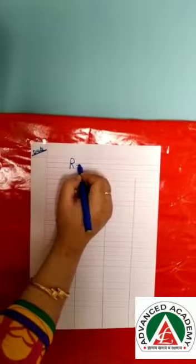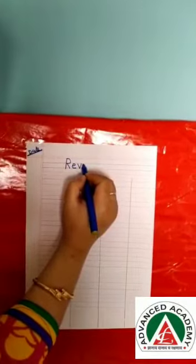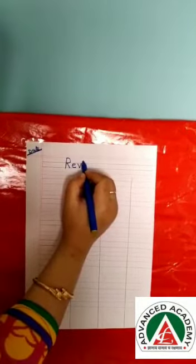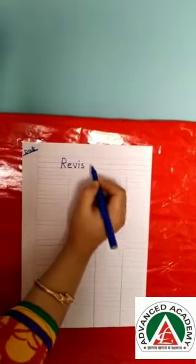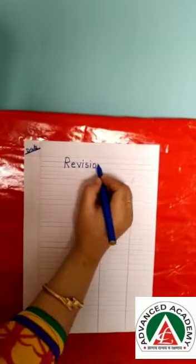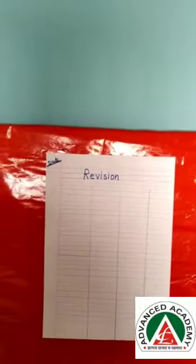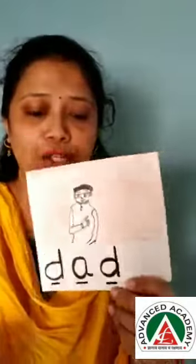R, E, V, I, S, I, O, N. Revision of A sound words. So what are those words which we have already learnt in the month of April? I will show you.